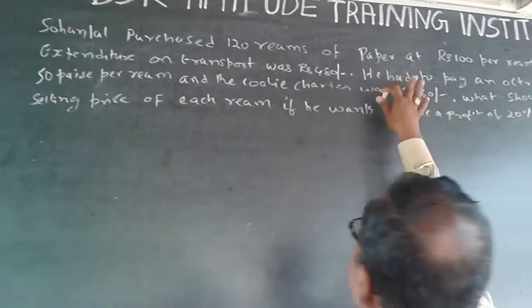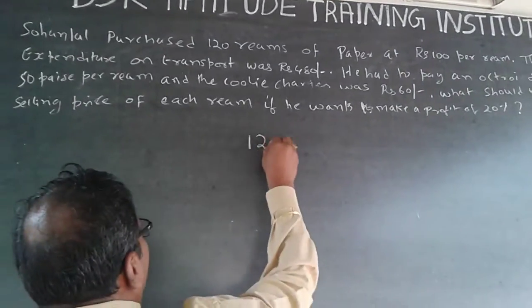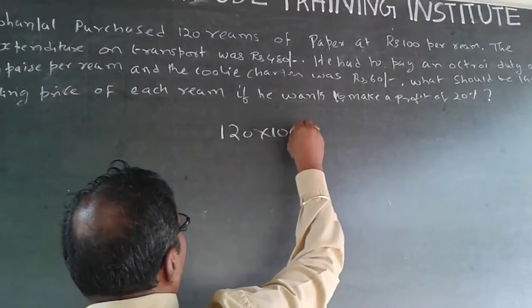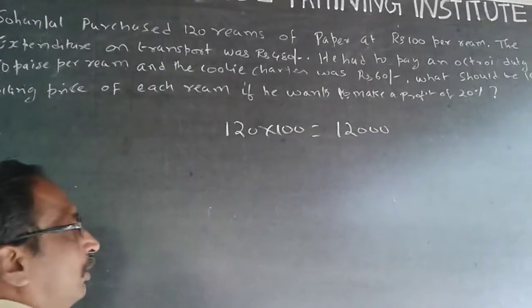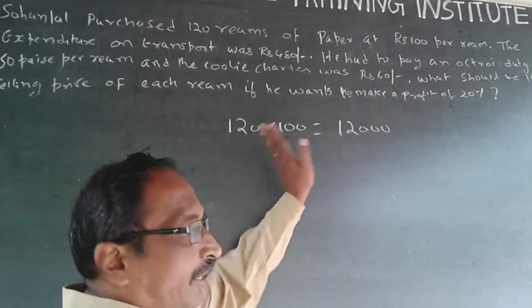Now, he has purchased 120 reams at a cost of 100. So 120 into 100 will be 12,000 rupees. This is the total cost of all the reams.